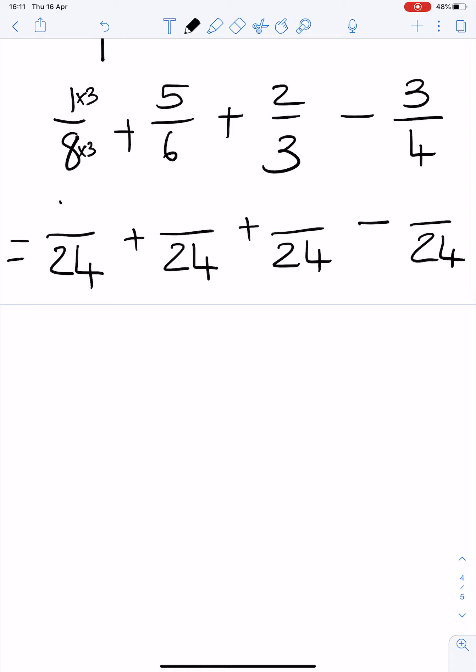8 times by 3 is 24, so I times the top as well. 6 times by 4 is 24, so I times the top as well. 3 times by 8 is 24, times the top. And 4 times by 6 is 24, so I do the same to the top. Now I can work it out.